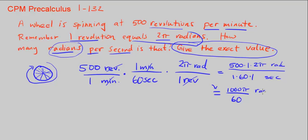We can simplify this. If we divide both by 2, we would get 1 left and 30 left down here. So we get 500 pi over 30 radians per second.